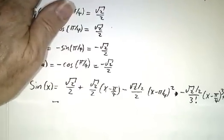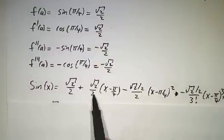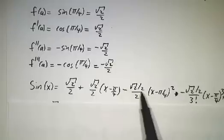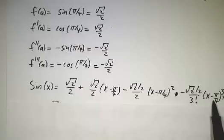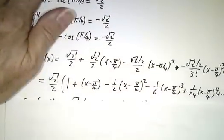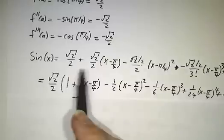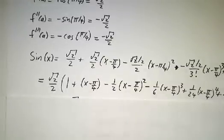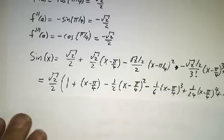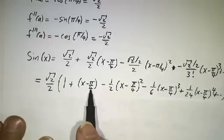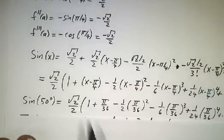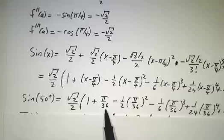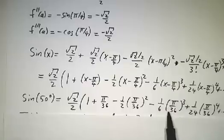So our Taylor series is the value at pi over 4 plus the derivative at pi over 4 times x minus pi over 4 plus the second derivative over 2 times x minus pi over 4 squared plus the third derivative over 3 factorial times x minus pi over 4 cubed, and so on, and factor out the root 2 over 2, and you actually get a fairly nice looking series. And we're trying to plug in x equals 50 degrees, so x minus pi over 4 is pi over 36, and we get the sine of 50 degrees is root 2 over 2 times 1 plus pi over 36 minus 1 half pi over 36 squared minus the sixth pi over 36 cubed plus the 24th pi over 36 to the fourth, and so on.